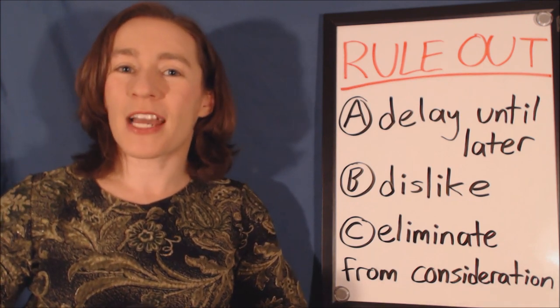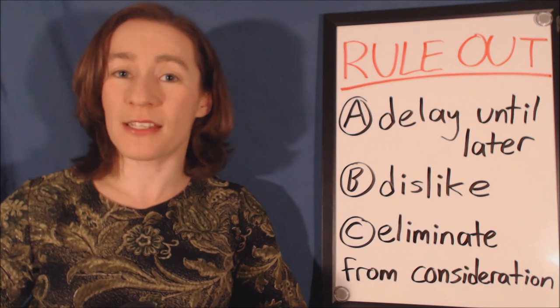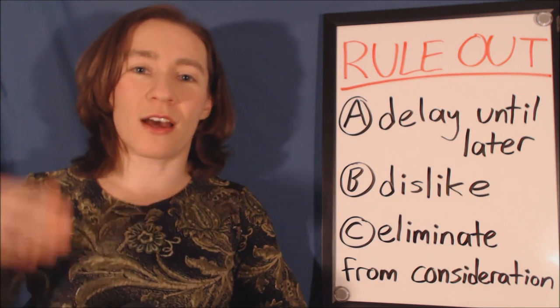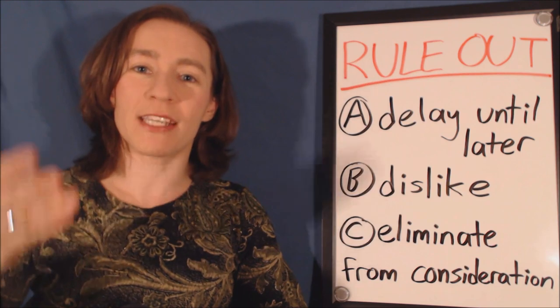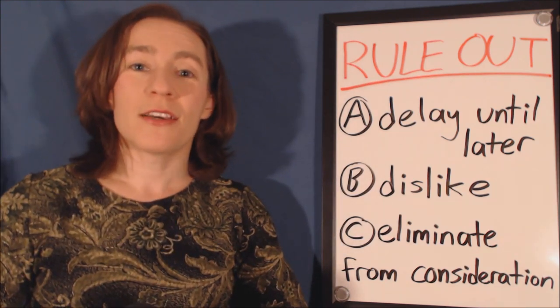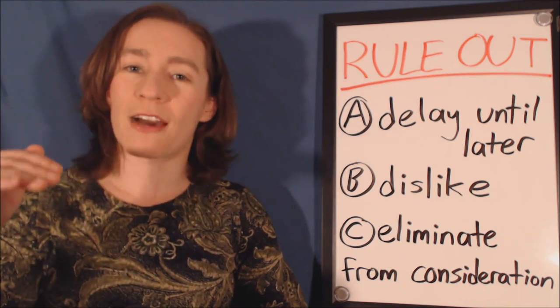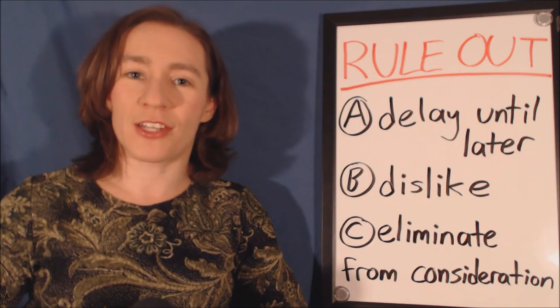So in this example, my husband ruled out the houses on the list that were too expensive for us. Among those 20 possibilities, those 20 options of potential houses to move into, five of them were too expensive, so we ruled them out. We eliminated them from consideration.